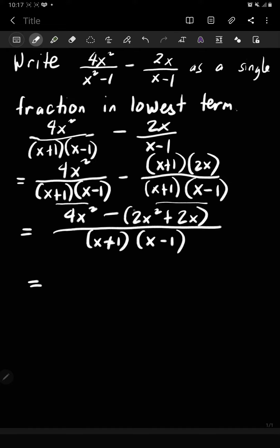So you have 4x² minus 2x² that is 2x². And then minus 2x. So over x plus 1 times the quantity of x minus 1. So in this case, you can still simplify.